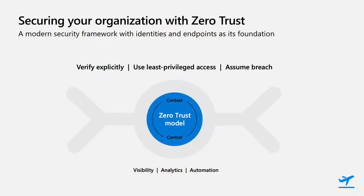Zero Trust is a security model that Microsoft has embraced end-to-end across its platform and solutions, and it's built on three basic core principles. The first is verify explicitly — can we verify the user's credentials? Can we explicitly verify that it's a known device? With those, we can raise the security level by adding things like looking at the risk of the login and ensuring that the device is compliant.